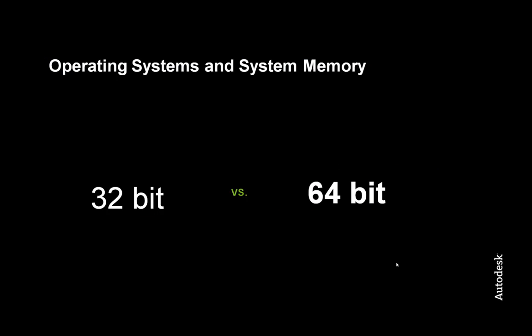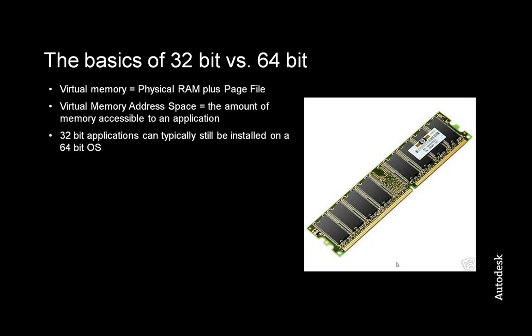Next, we are going to review the basics of 32 versus 64-bit environments. First, let's go over some terminology. Virtual memory is typically referring to the physical memory plus the page file. Virtual memory address space is what is used to describe the total amount of memory accessible to any application. And lastly, it is important to note that, as a general rule, most 32-bit applications can still be installed on a 64-bit operating system. This is not always the case, such as with older versions of Civil 3D, but if you still need a copy of 2009 or 2010, these can still be installed.